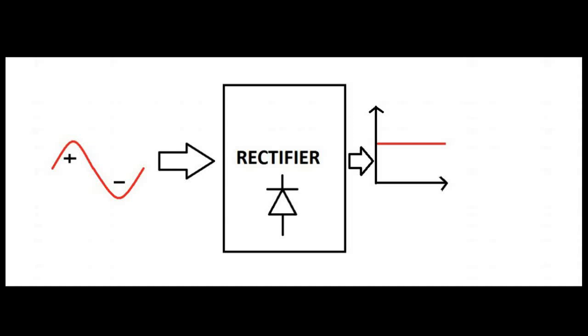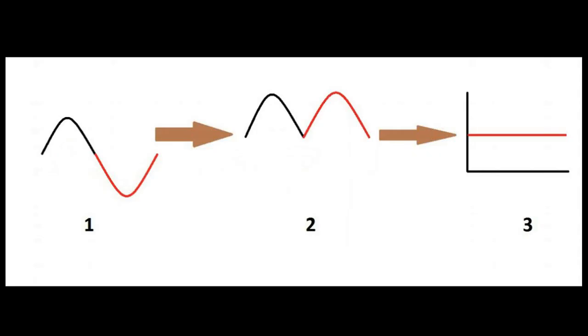What is a rectifier? Anything which converts AC into DC is called a rectifier. It's a three-step process: convert AC into ripple DC and finally pure DC.